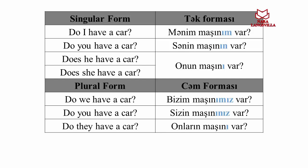Plural form — cəm forması. Do we have a car? Bizim maşınımız var mı? Do you have a car? Sizin maşınınız var mı? Do they have a car? Onların maşını var mı?